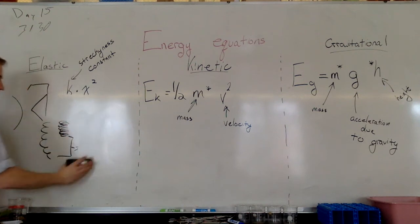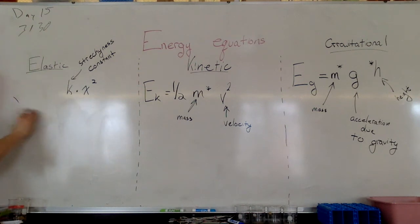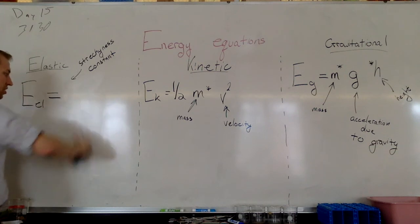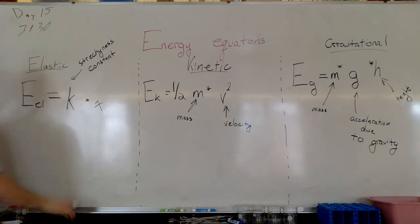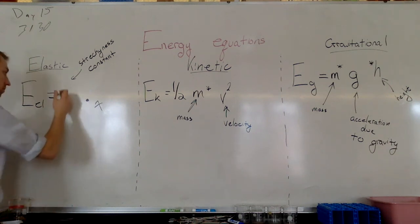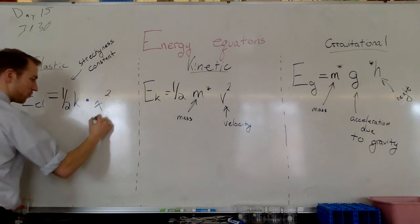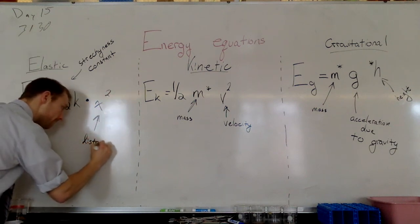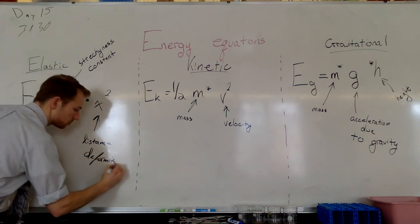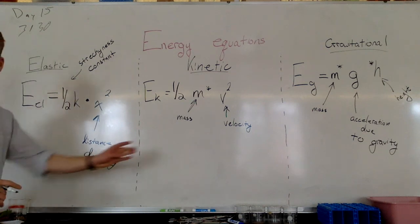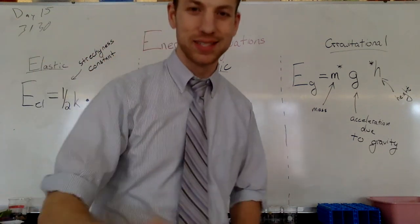Let me get these out of here. I feel like these are distracting us. So, elastic energy is equal to our stretchiness constant, K, multiplied by one half K, actually, multiplied by our distance deformed. And these are our three equations for today. Thanks. See you guys next class.